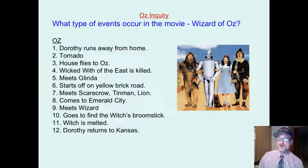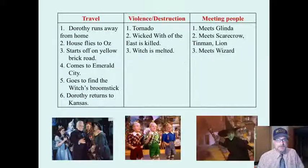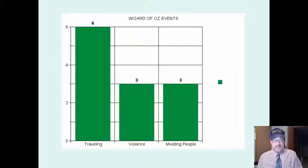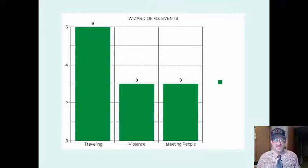For example, if The Wizard of Oz were a book, what type of events occur in this movie? We simply listed important events, put them into groups using inductive analysis, and then we were able to describe and quantify the events in terms of the group — six traveling events, violence events, meeting people events. You get the idea.